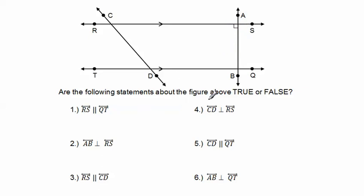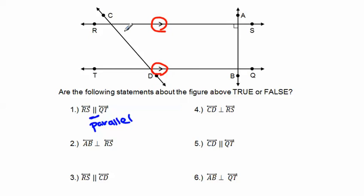Are the following statements true or false? First: line RS is parallel to line QT. Remember, the parallel symbol is two vertical lines. Looking at the figure, line RS and line QT each have one arrow, and that means these two lines are in fact parallel to each other. So that is a true statement.